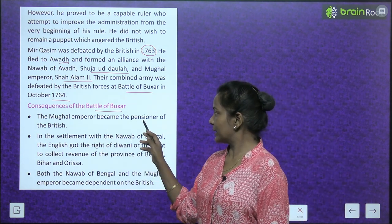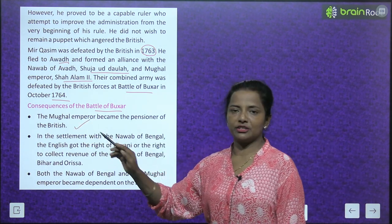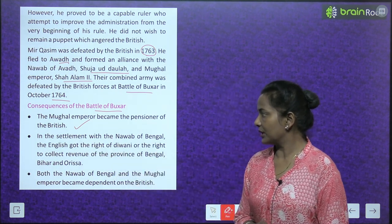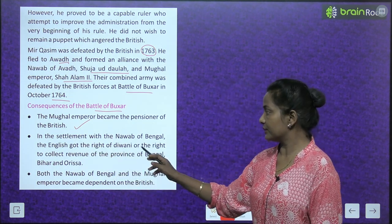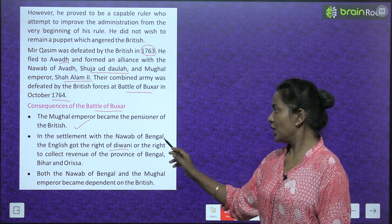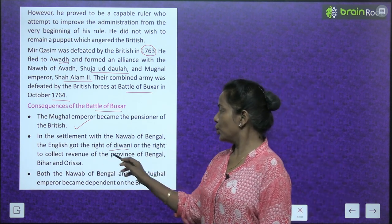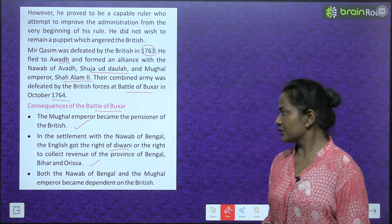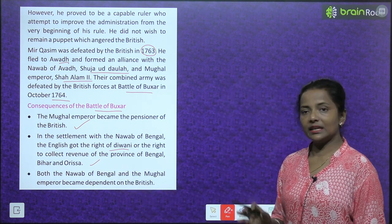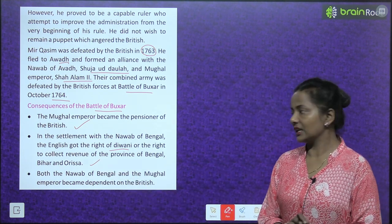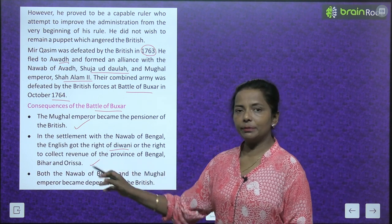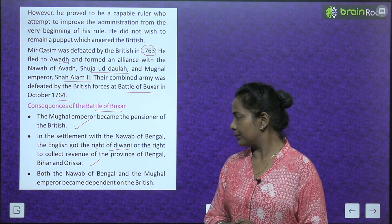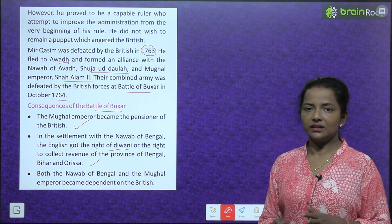Consequences of the Battle of Buxar: The Mughal Emperor became the pensioner of the British. In the settlement with the Nawab of Bengal, the English got the right of Diwani — or the right to collect revenue — of the provinces of Bengal, Bihar, and Orissa. Both the Nawab of Bengal and the Mughal Emperor became dependent on the British.